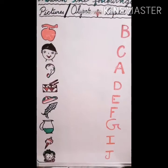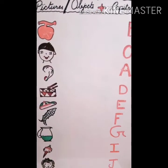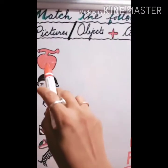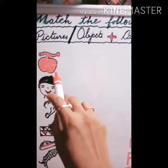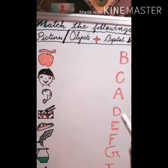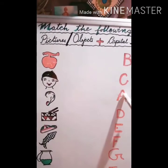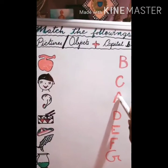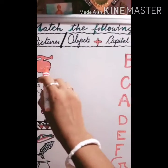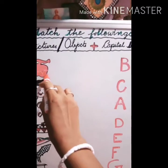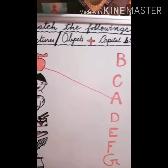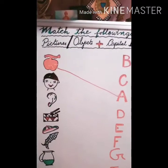Take the first picture. First picture is apple — A for apple. So where is A? Here. Then you have to join this.